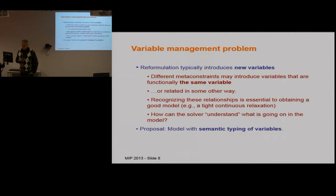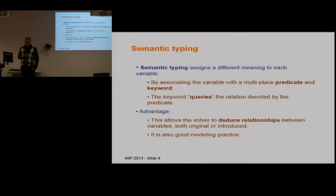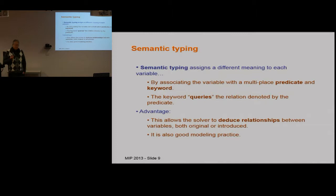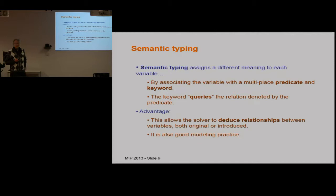We're going to address this problem using a typing strategy — semantic typing. Semantic typing is a way of associating each variable with a predicate and a keyword. The model is organised around predicates, multi-place predicates, and when we declare a variable, we do it by querying the relation denoted by that predicate — something like a database query. This allows us to deduce relationships between variables, not only variables in the original model, but variables created to convert constraints into solver form. It also documents the model — it's self-documenting.